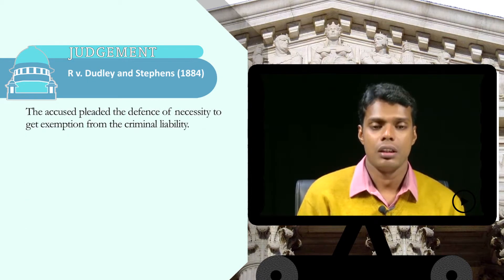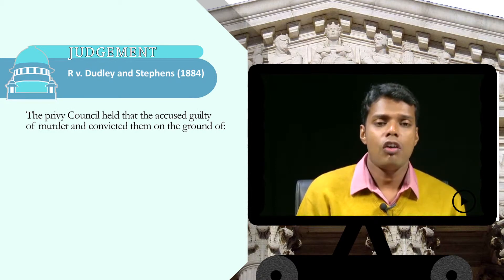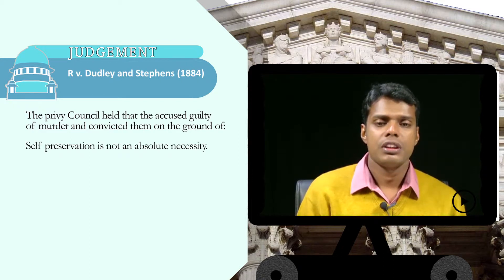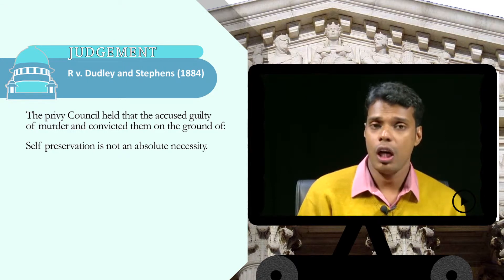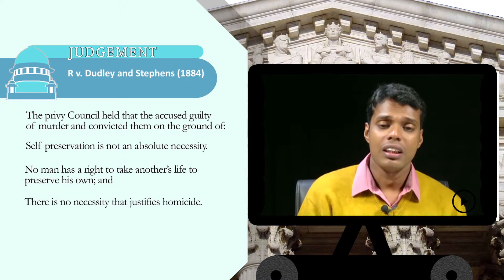The accused pleaded the defense of necessity to get exemption from criminal liability. The question was whether killing a person comes under Section 81 or the concept of necessity. The Privy Council held the accused guilty of murder on the following grounds: first, self-preservation is not an absolute necessity; second, no man has a right to take another's life to preserve his own; and third, there is no necessity that justifies homicide.